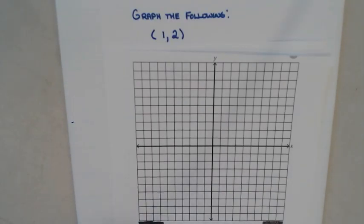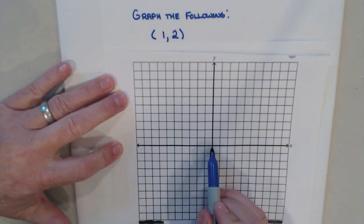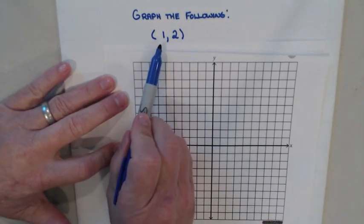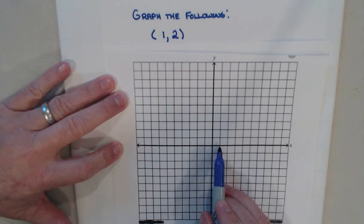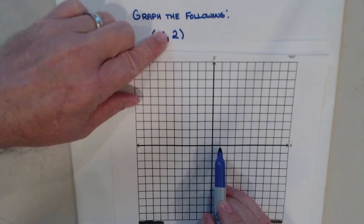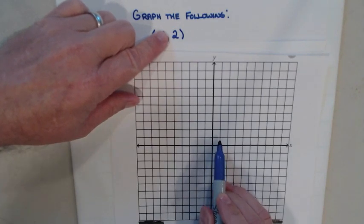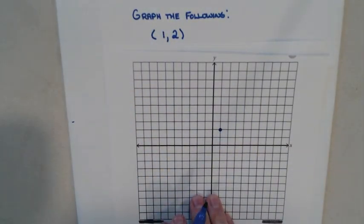We're going to graph this first point on this coordinate plane. I'm going to use the first number and start in the middle. Because it's positive, I'm going to move over the number it tells me — over one. Then I use the second number, which is positive, so I go up that many: one, two. That's me plotting that first point right there.